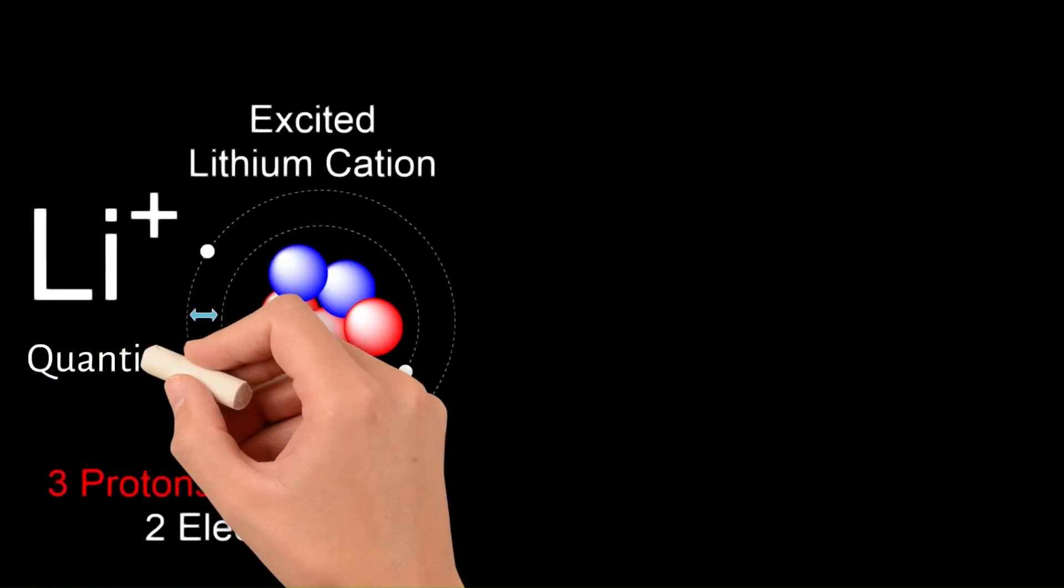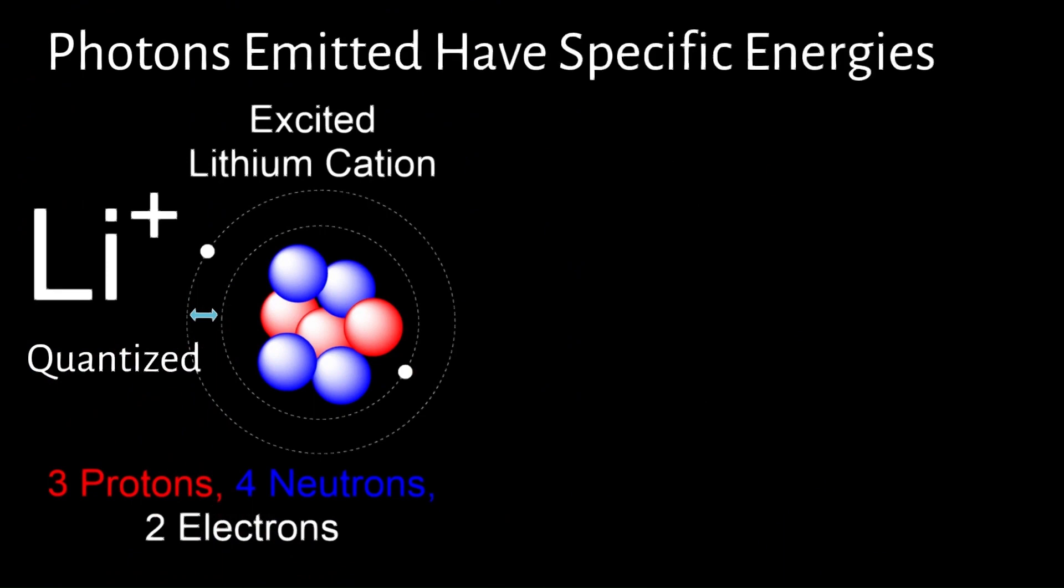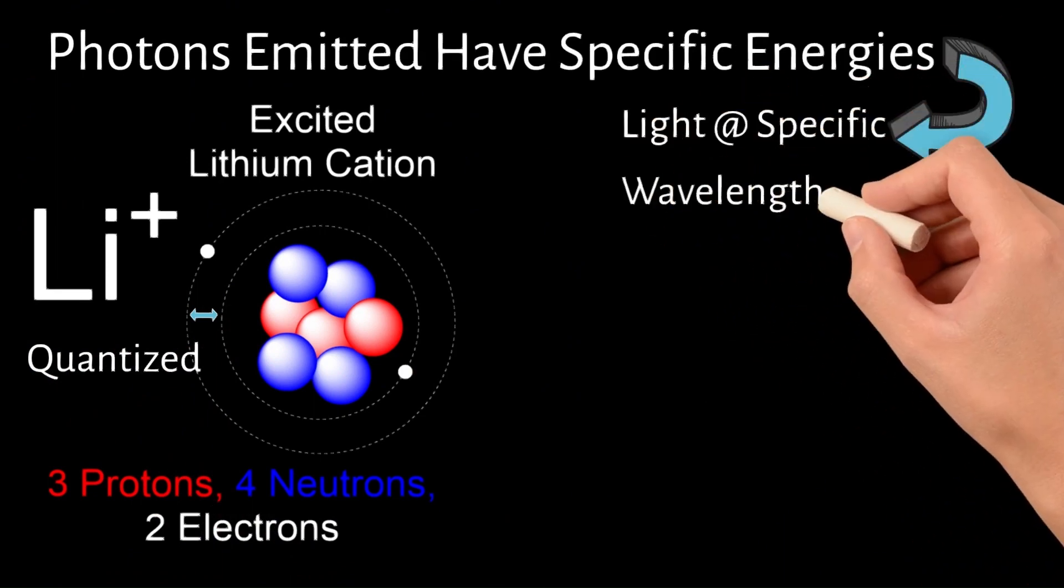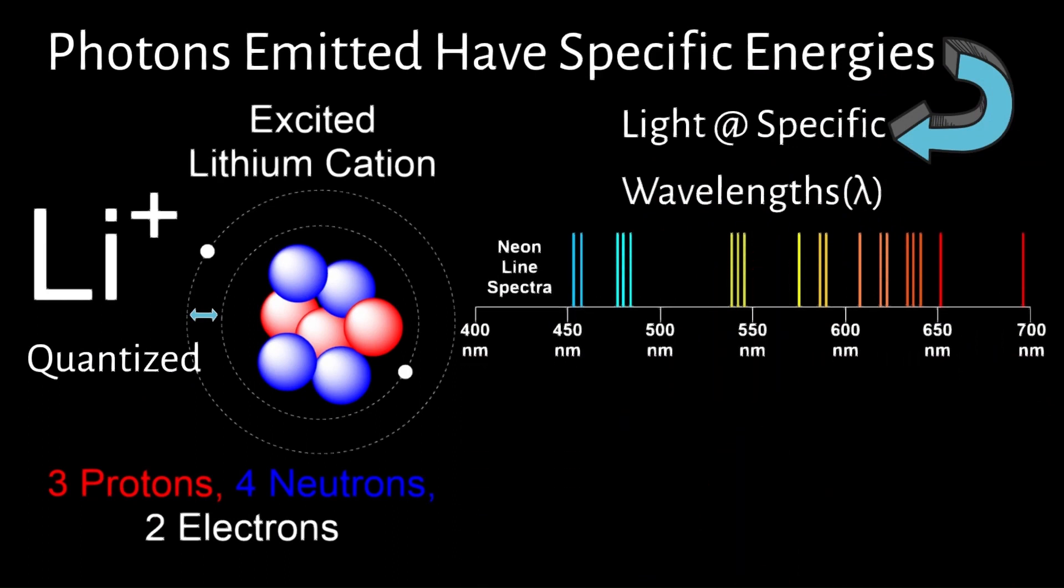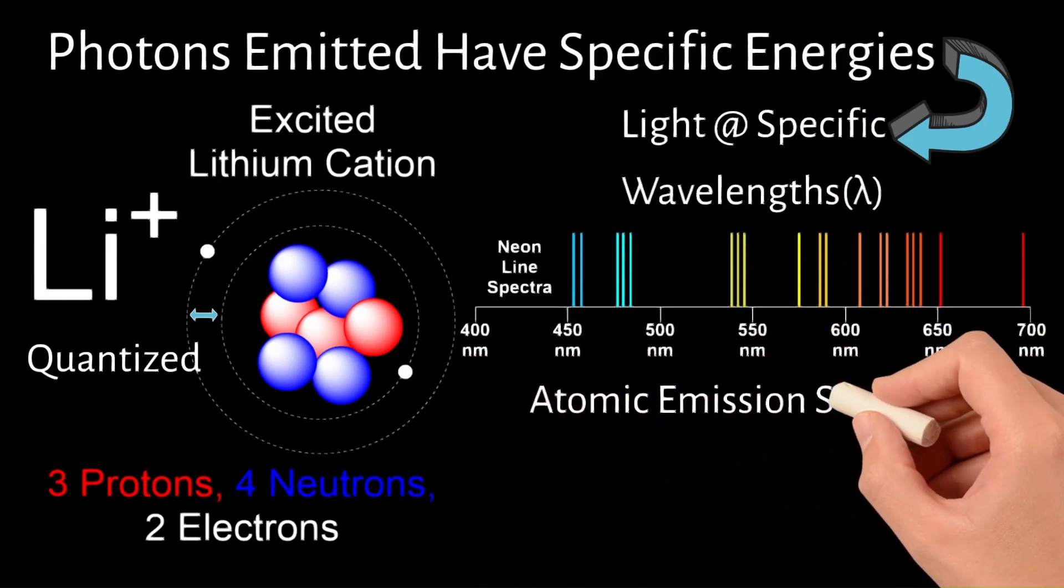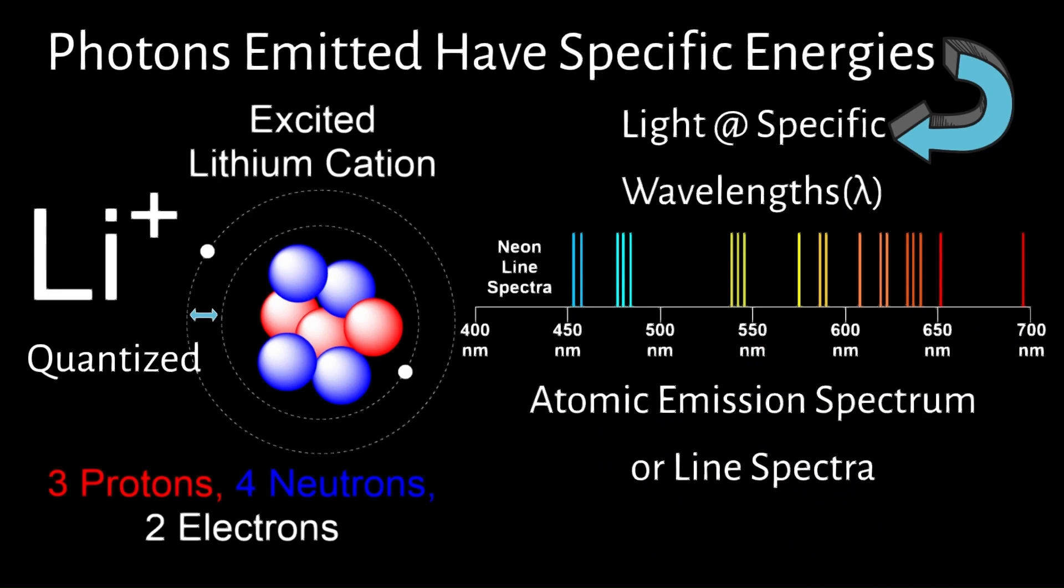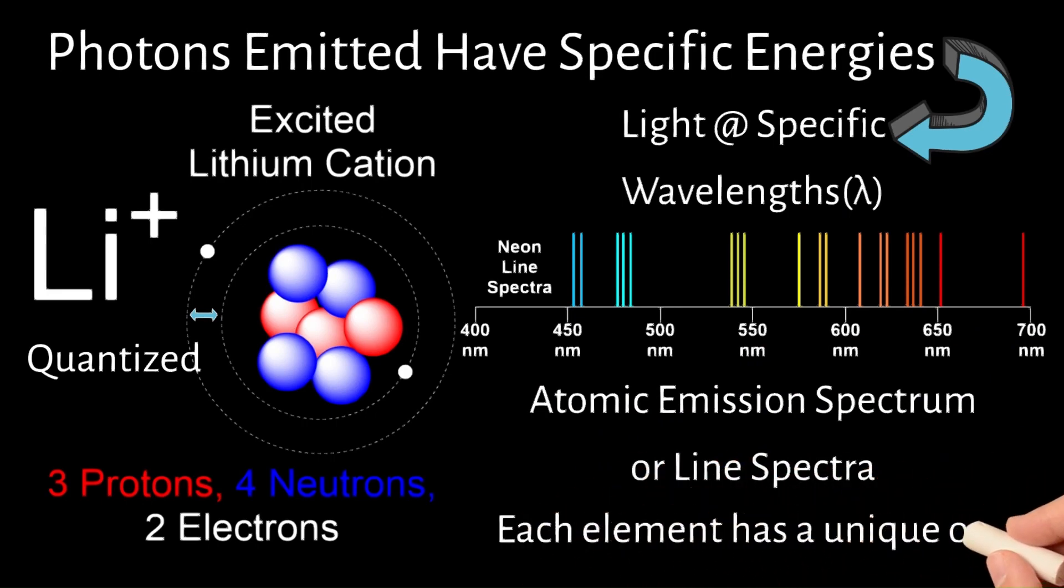Because the energy levels in atoms are quantized, the photons emitted during transitions have specific energies. This results in the emission of light at specific wavelengths, producing a series of discrete lines known as the atomic emission spectrum or line spectra. Each element has a unique line spectrum, serving as a fingerprint for identifying atomic substances. However, there are some key limitations to Bohr's model.